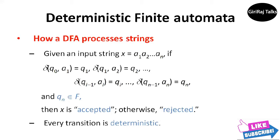If qn is a member of F — F means final states — then the input a1, a2, a3 up to an is accepted. And if not, then it is rejected.